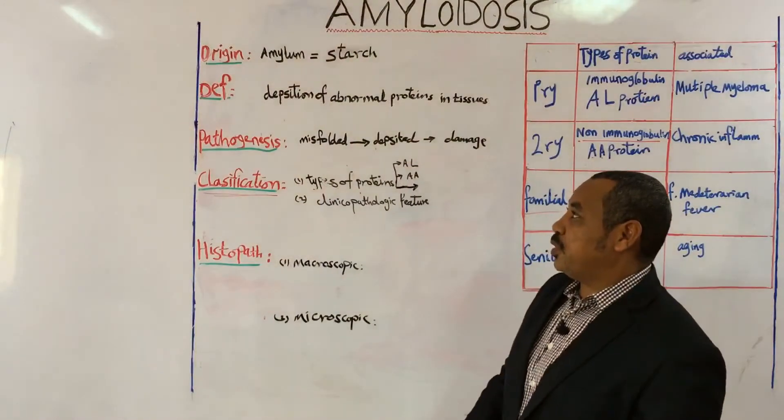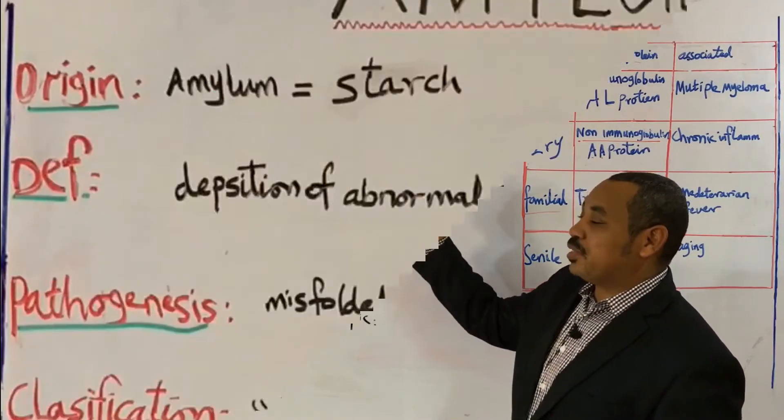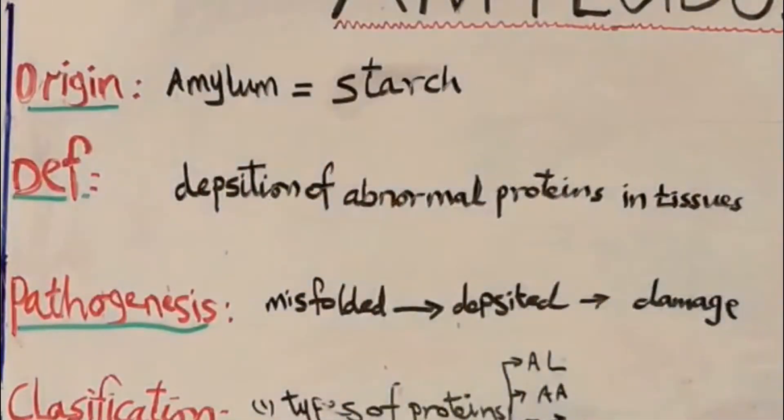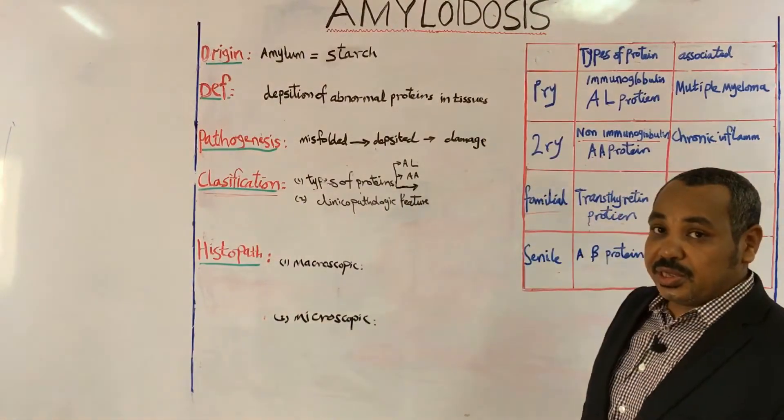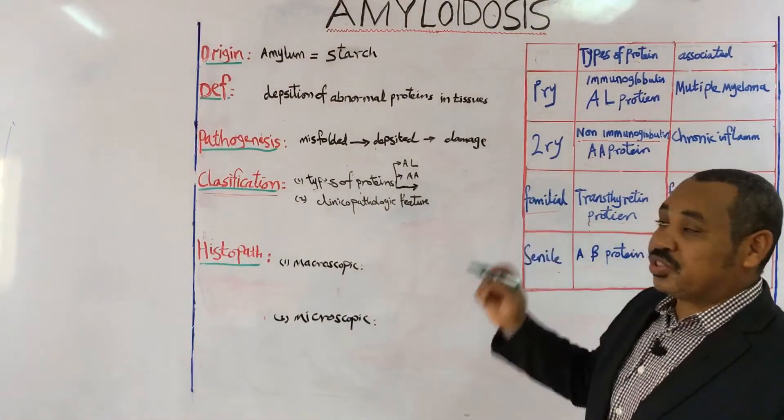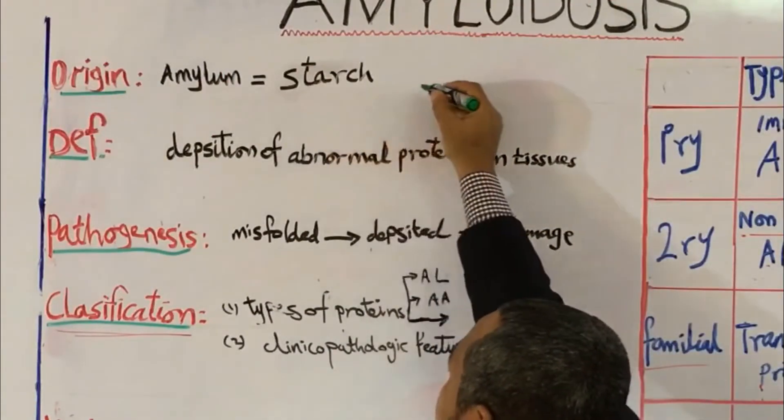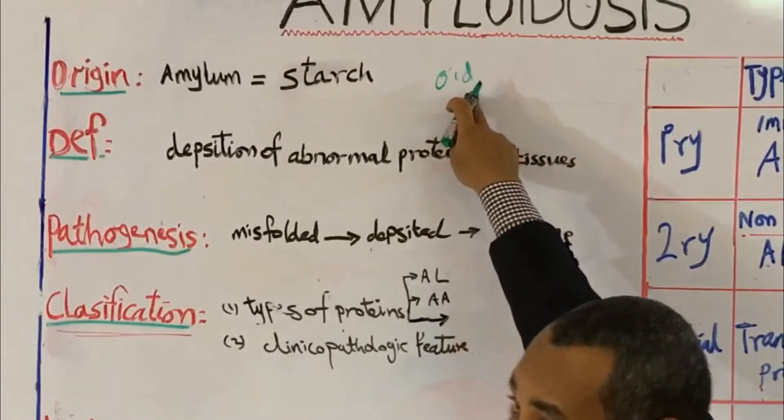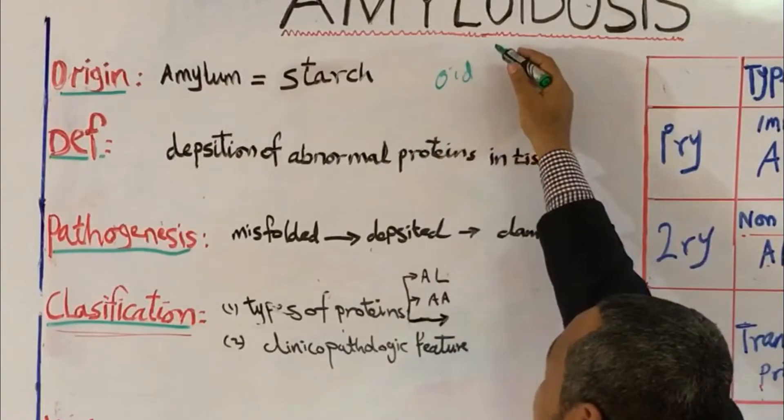Let us start by the first point here. What is the origin of this word amyloidosis? Actually it comes from a Latin word called amylum, which means starch. OID means similar to.